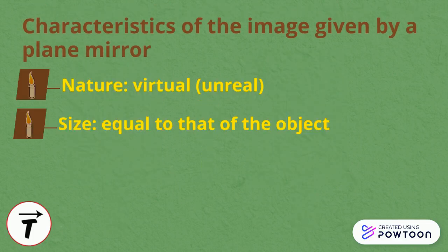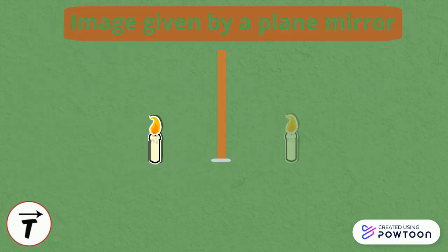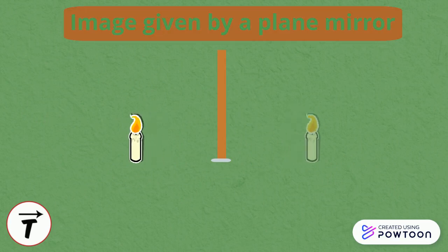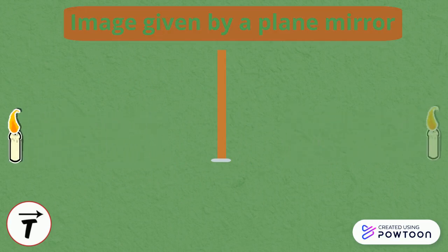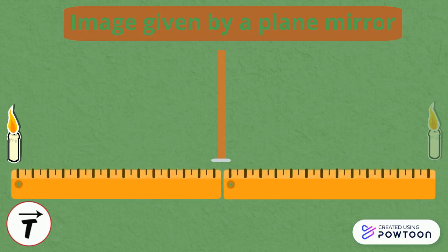Third, the position of the image. The image is symmetric to the object with respect to the mirror. As we change the distance between the candle and the mirror, the image will remain as far behind the mirror as the object is in front of the mirror.